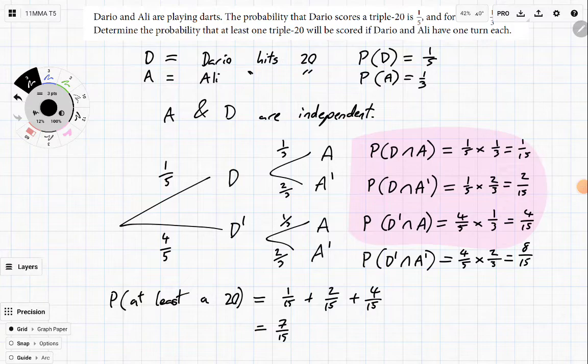Alternatively, you could have used one minus that. Either option would have worked fine. Now, you can see the power of independence. If we didn't have the independence, we wouldn't have been able to work out these probabilities really quickly. All right. See you in the next one.